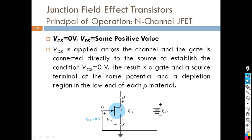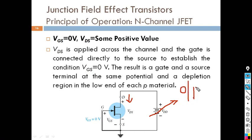By varying this reverse bias voltage VDS, we can observe how current is modified — this is the output characteristic. Electrons are attracted toward the positive drain end, so drain current ID flows. By varying VGS, we see how ID is modified — that is called the transfer characteristic.